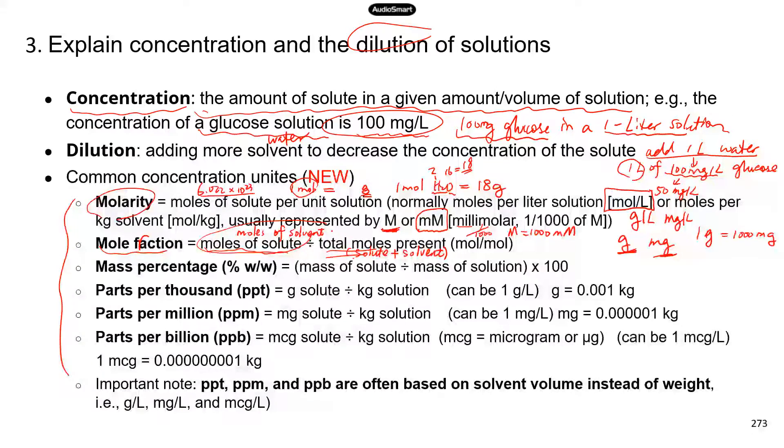Next one is mass percentage. So it's usually denoted as percentage W slash W - weight by weight. That's very straightforward. Mass of the solute divided by mass of the solution. And because it's a percentage, so you just multiply by 100.